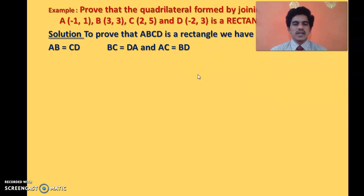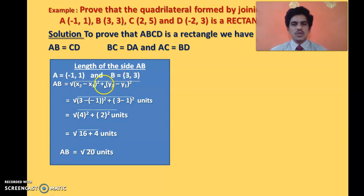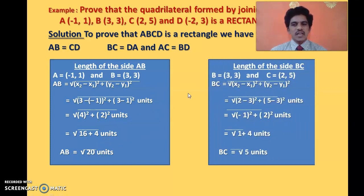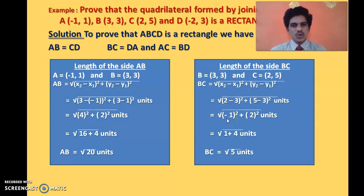First, let us find side AB. Using the distance formula with A as (x1, y1) and B as (x2, y2): AB = √[(3−(−1))² + (3−1)²] = √[4² + 2²] = √20. Now let us find BC, using B as (x1, y1) and C as (x2, y2): BC = √[(2−3)² + (5−3)²] = √[(−1)² + 2²] = √5.